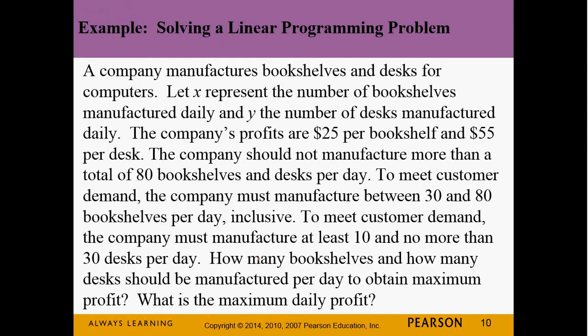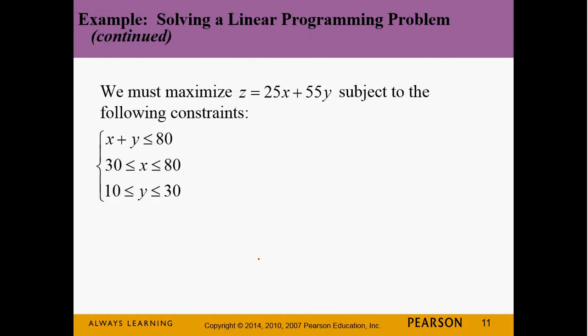Here's the problem all put together. We manufacture bookshelves and desks. X is the bookshelves, Y is the desks. $25 profit per bookshelf, $55 profit per desk. Can't manufacture more than a total of 80. You have to have between 30 and 80 bookshelves and between 10 and 30 desks. So how many of each do we need to manufacture to maximize our profit, and what is that maximum profit?